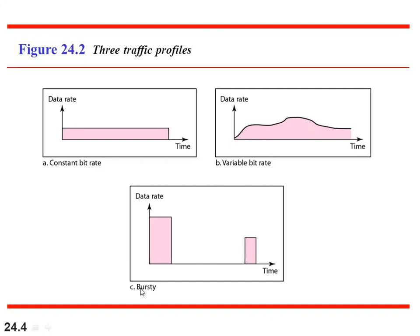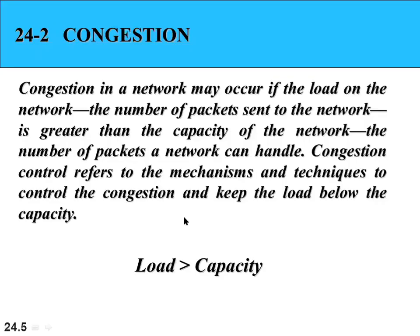The third type of traffic is bursty traffic, and this is the worst type of traffic the network may experience. Here, the data rate in the network suddenly increases to a very high value and remains at peak data rate for a very long duration, then becomes zero, and after some time again the network experiences a lot of data traffic. In bursty traffic, average data rate and peak data rate are very different, and this type of traffic is very difficult for a network to handle, so we need to reshape it to be more like variable bit rate or constant bit rate.